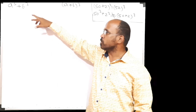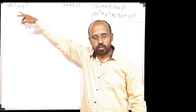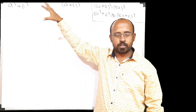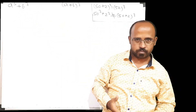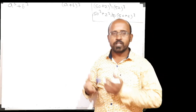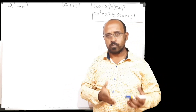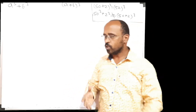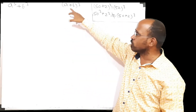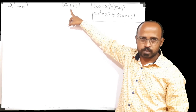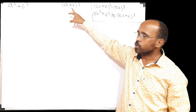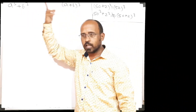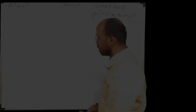Now we have to derive the new formula for a cube plus b cube. What is our style of derivation? Normally we use old formulae which we know. So in this case, we know the formula of a plus b bracket cube. We will use this formula to derive this formula. Let's go for it.